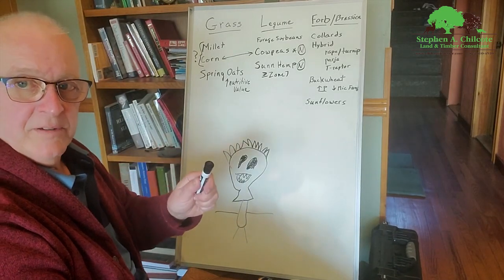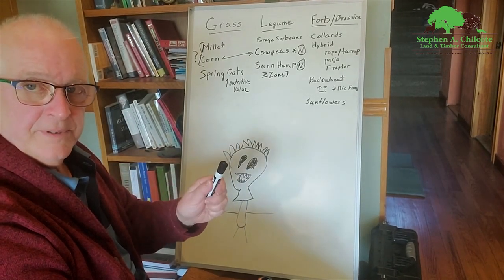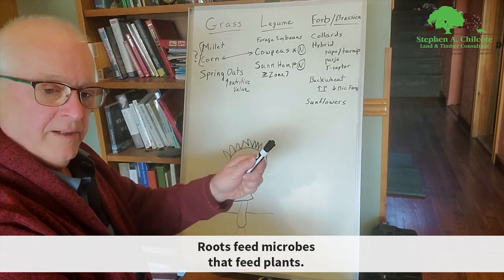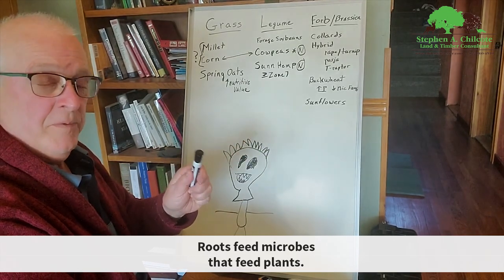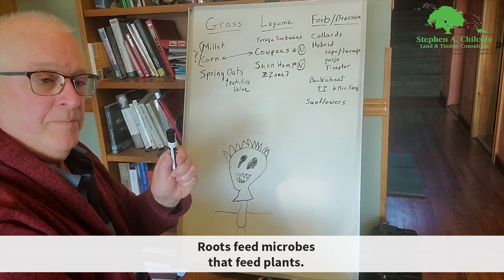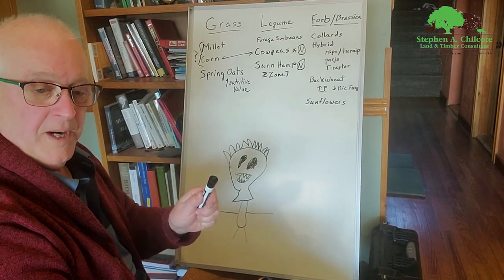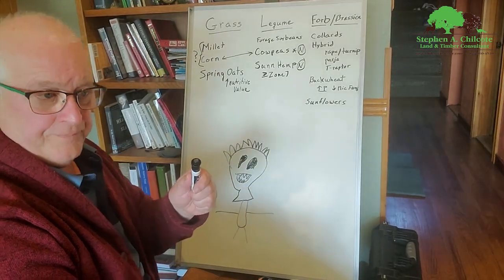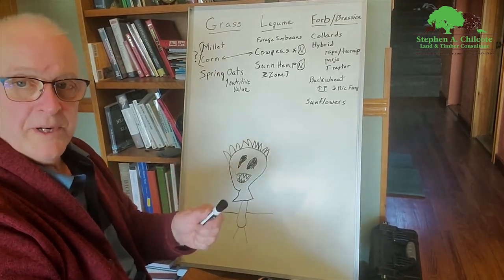Then you can drill through that and put your fall stuff in and beef that up. The important thing is to keep living roots in the ground at all times. I'm gonna say it again: keep living roots in the ground all the time. What we want to do also is to build up our soil in such a way that we don't have to put inputs in anymore.